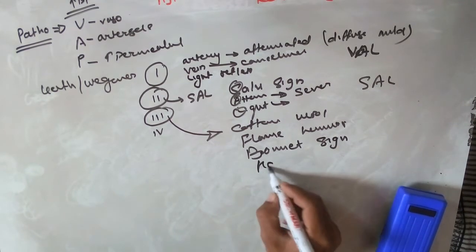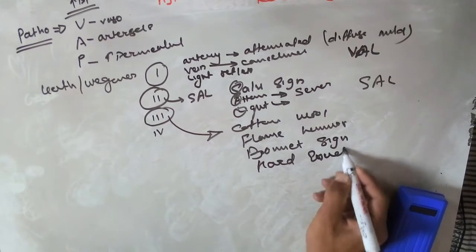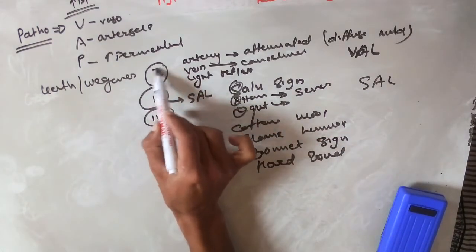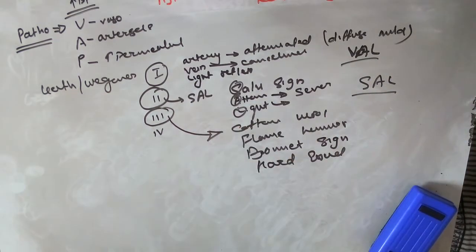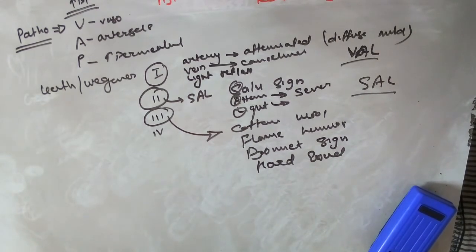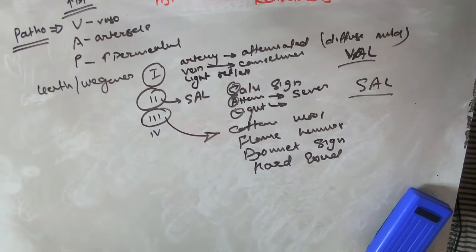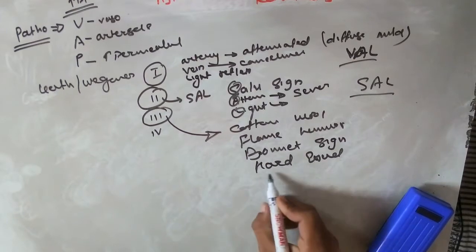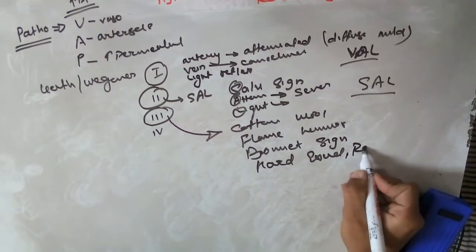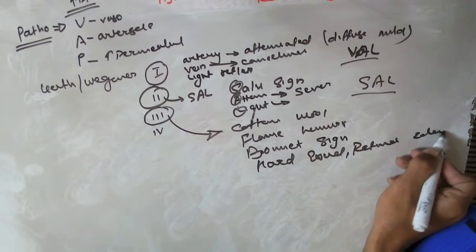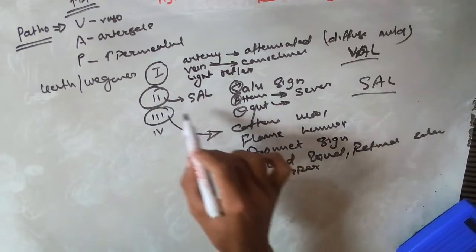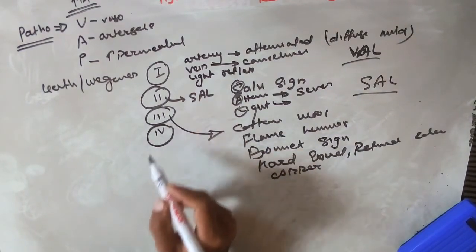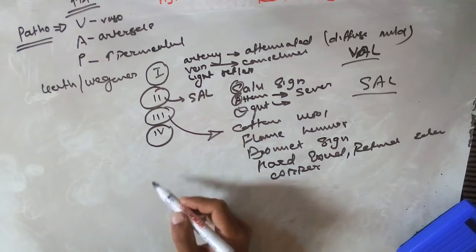Additional grade three features include hard exudates, retinal edema, and copper wiring. To summarize, grade one uses mnemonic HAL, grade two uses SAL, and grade three includes all features: cotton wool spots, flame-shaped hemorrhages, Bonnet sign, hard exudates, retinal edema, and copper wiring.